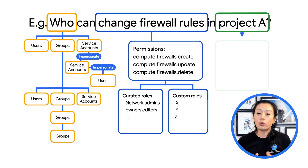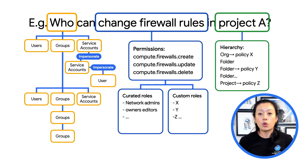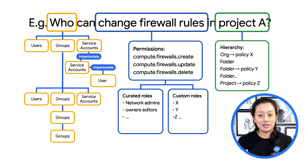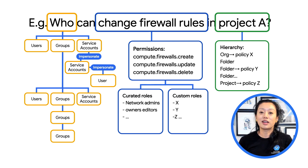At last, let's look at the last part of the question — project A. We all know IAM policies can be inherited, which requires you to not only look at the IAM policy directly on project A, but also trace up along the hierarchy to the folders and the orgs above to make sure all the policies are analyzed. Luckily, Policy Analyzer analyzes resource and policy hierarchy as well. It also analyzes IAM conditions and exports results to Cloud Storage buckets or a BigQuery table. So you can see how much work Policy Analyzer does for you behind the scenes in order to provide a truly complete and comprehensive answer on who can access what and why.